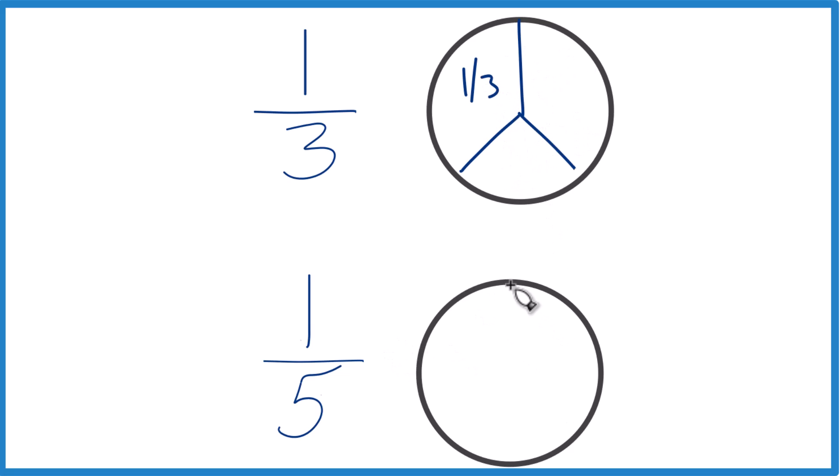Down here, let's divide this into five pieces. So like this, there you go, one, two, three, four, five. Each piece here is going to be 1/5.